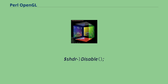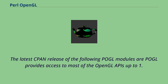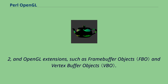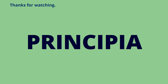The latest CPAN release of the Pugl modules provides access to most of the OpenGL APIs up to 1.2 and OpenGL extensions, such as framebuffer objects and vertex buffer objects.